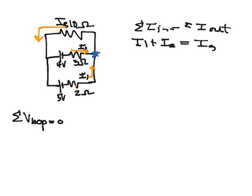In the loop rule, I have to choose a loop that I'm going around. So I'll do a red loop, let's say I start at my 5 volt battery, and I'm going to go all the way around here. Okay, so going around that red loop, starting at my battery,